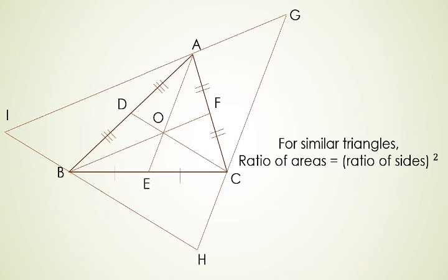Now we have a property for similar triangles: if we know the ratio of corresponding sides of two similar triangles, then we can calculate the ratio of their areas, and that will be the square of the ratio of the sides.